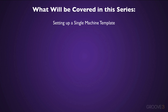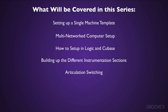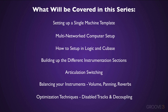So what we're going to cover in this course is how to set up a single machine template and a Master-Slave Network template. Then we'll explore how these are set up differently between Logic and Cubase. Then we'll look at how to build up the different sections in the template. Following this, I'll show you how to use different articulations and how to switch between them with software tools. And then finally, we'll look at how to balance all the instrument levels, set up reverbs so that all the instruments sound like they belong together, and explore the power of using disabled tracks in Cubase and VE Pro, and how coupled and decoupled tracks work in VE Pro to give you the best workflow. So let's jump in and see how you can get started with cinematic template designs.